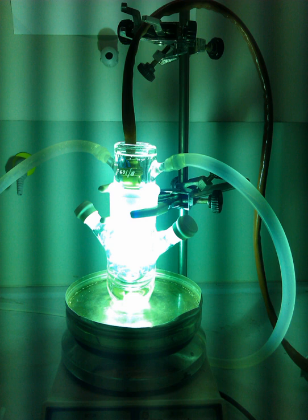Photochemistry is the branch of chemistry concerned with the chemical effects of light. Generally, this term is used to describe a chemical reaction caused by absorption of ultraviolet, visible light or infrared radiation. In nature, photochemistry is of immense importance as it is the basis of photosynthesis, vision, and the formation of vitamin D with sunlight.